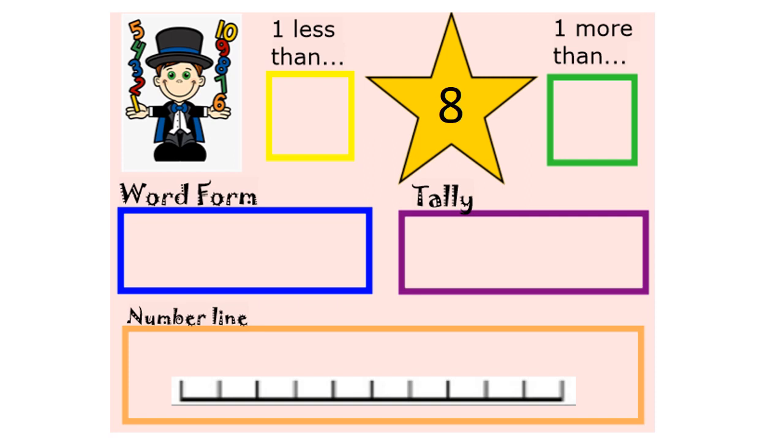For example, today let's say that eight is our magic number. Then we might do some actions, so maybe we'll clap eight times: one, two, three, four, five, six, seven, eight—always remembering to stop at your magic number. We might turn around eight times: one, two, three, four, five, six, seven, eight, stop. Fantastic!